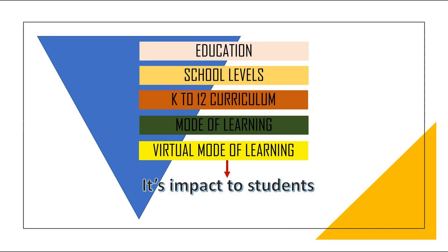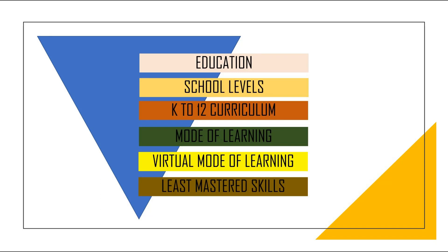It looks very specific now. We already have a more specific topic compared to the broad topic 'education,' but we can still make it even better. The question to ask is: in which aspect of the student's academics does the virtual mode of learning have the greatest impact? So I arrived at this specific topic: the least mastered skills of students during the virtual mode of learning — studying what skills students failed to master because classes were conducted virtually, leading to finding solutions to assist students in improving those skills. This is how you narrow down a broad topic.